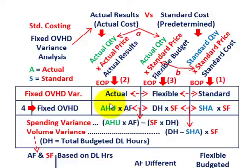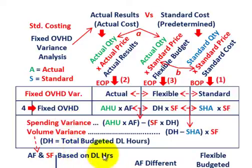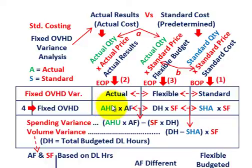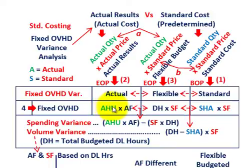Let's look at our table to determine the different variances. We're going to look at a spending variance and a volume variance for fixed overhead, and these variances are based on direct labor hours — that's our allocation basis. For the spending variance, that's the difference between actual versus flexible budgeted amount. The actual amount is the actual hours used times the actual fixed rate. We have to determine an overhead rate based on those direct labor hours we allocated on.